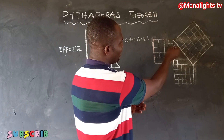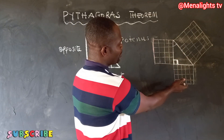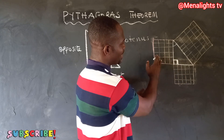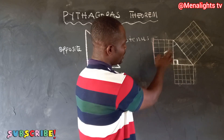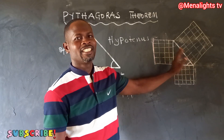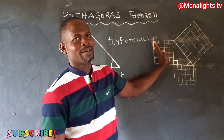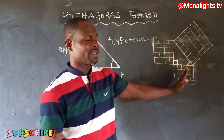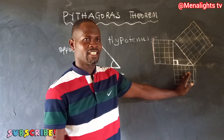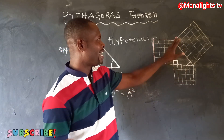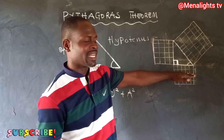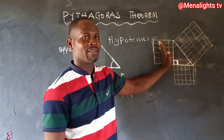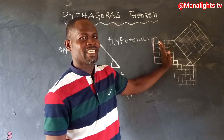So if the angle is here, this side becomes the opposite and this becomes the adjacent. If the angle is here, then this side becomes the opposite and this becomes the adjacent. But if we have the angle here, then this side becomes the opposite and this becomes the adjacent.